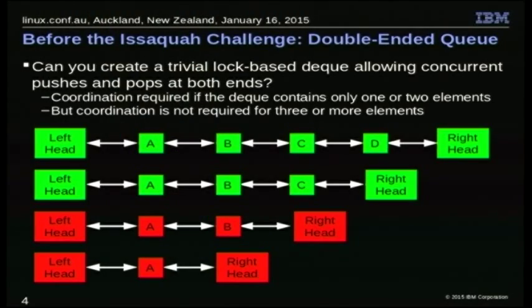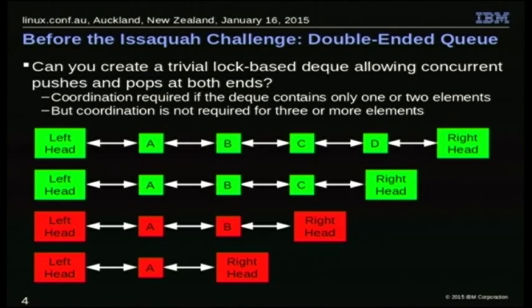If you have four elements in this double-ended queue, clearly somebody can dequeue and enqueue both ends without any interference whatsoever. One of them is messing with the right head element D and the other with element A at the left head. There's no overlap, so you don't even need mutual exclusion. It'll just work. And deletion is the same deal — even down to three elements it still works, because they're going to hit different pointers in the middle element B.